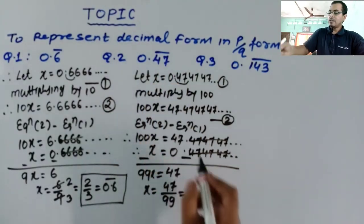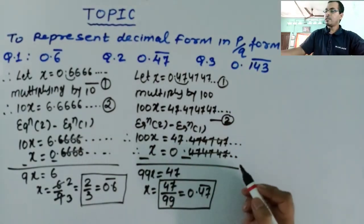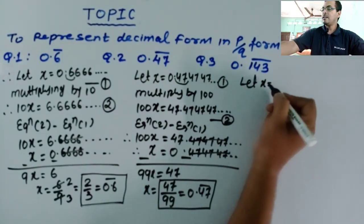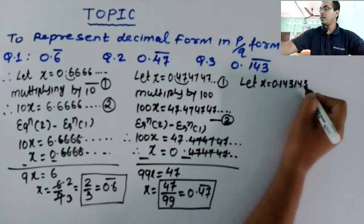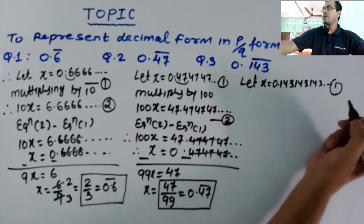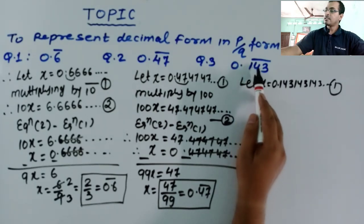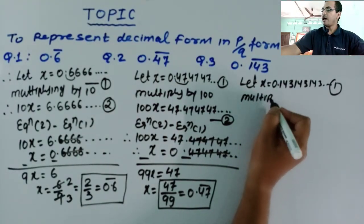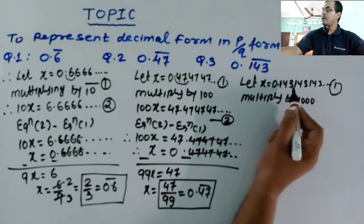So 0.47 bar can be written as 47 by 99. In question number 3, the same process applies. Let x is equal to 0.143143143 and so on. Consider this as equation 1. After the decimal place, 3 digits are repeating again and again, so this equation will be multiplied by 1000.